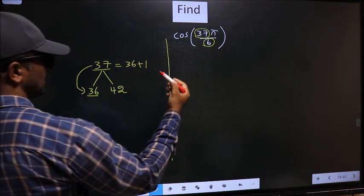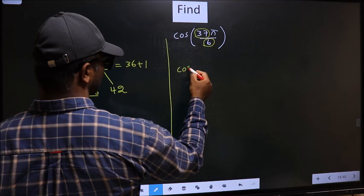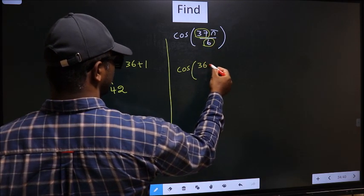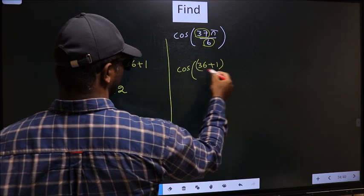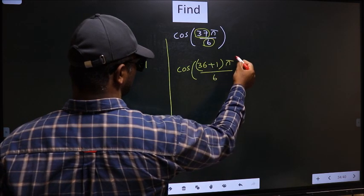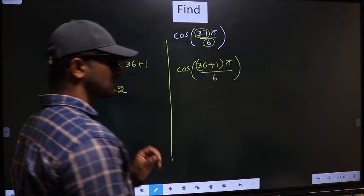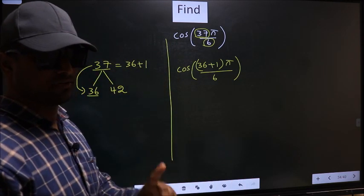So this will change to cos. In place of 37, now you write 36 plus 1, π by 6. This is your step 1.